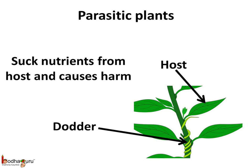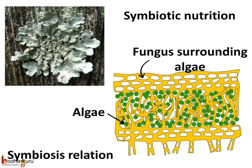A few plants grow on other plants and absorb nutrients from the host, like Dodder and mistletoe. They are called parasites and they harm the host, though a parasitic plant very rarely or never kills its host. Sometimes two different plants depend on each other for nutrition and live in association, like lichen. This relationship between two plants is called symbiosis, so the nutrition is called symbiotic nutrition.